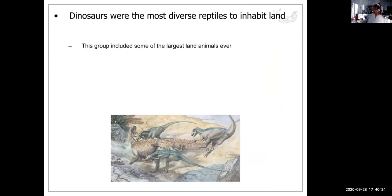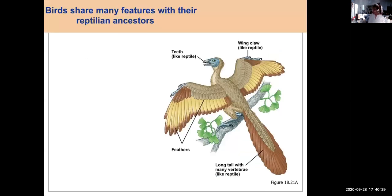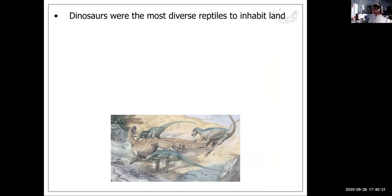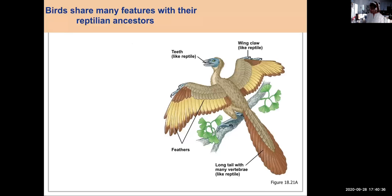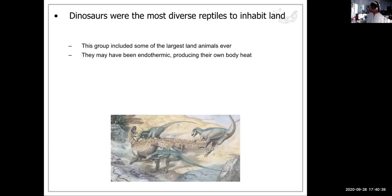Dinosaurs were the most diverse reptiles to inhabit land. And dinosaurs, they may have been endothermic. There's some evidence to show that. And they, however, disappeared at the end of the Cretaceous. Sorry about the writing. Something about the pencil keeps changing. And so I can't put my hand on the screen now.